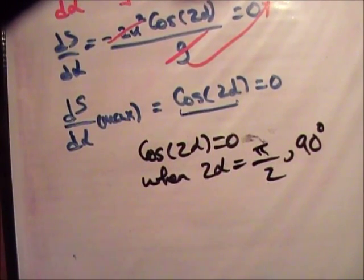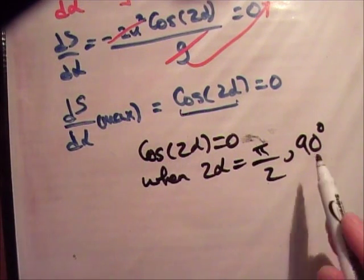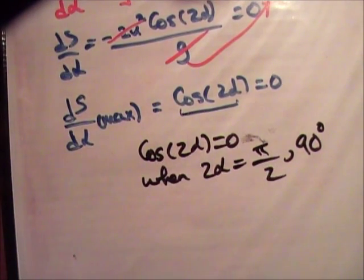Does that make any sense? So, when cos of 90 is 0. That's the same as cos of pi over 2. So, 2 alpha must be equal to 90 degrees or pi over 2.